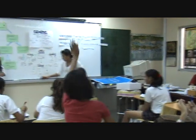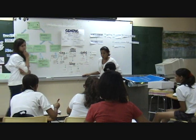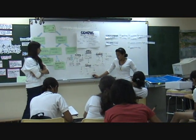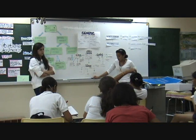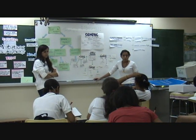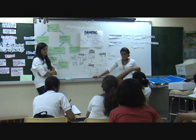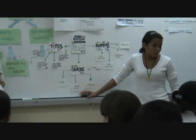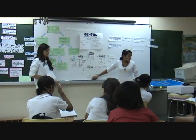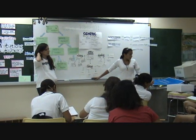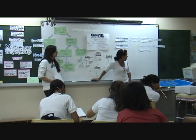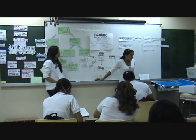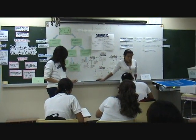Autosomal is divided into dominant and recessive. Sex-linked is divided into X-linked and Y-linked. X-linked is further divided into dominant and recessive. Is that clear? That is only by single-cell, or Mendelian.